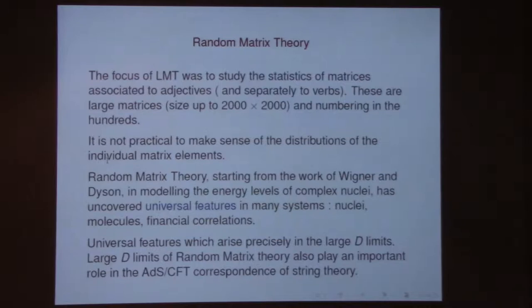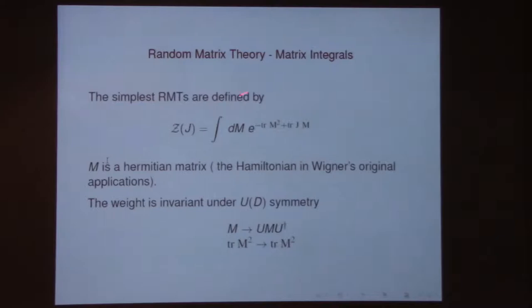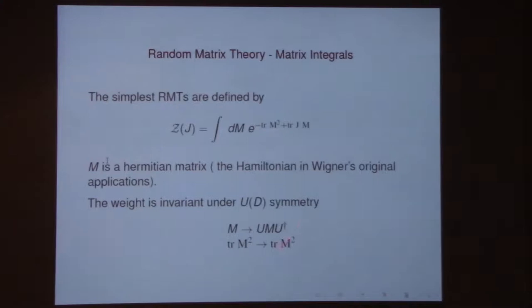Just to remind ourselves what these things look like: you are doing the simplest matrix integrals. You have an integral with a Hermitian matrix, a Gaussian measure, and you can calculate correlators or eigenvalue distributions. These simple models have unitary symmetry — M transforms to UMU†, and trace M² is invariant. In physics, this unitary invariance corresponds to basis changes in the Hilbert space.